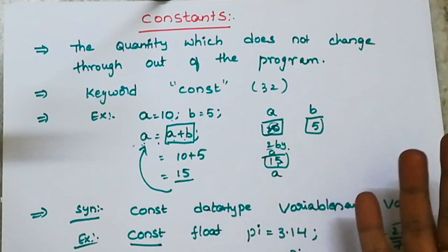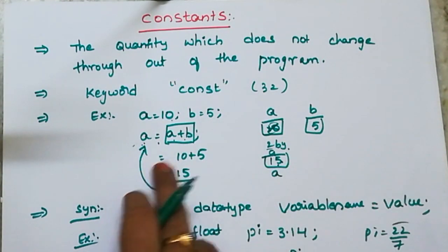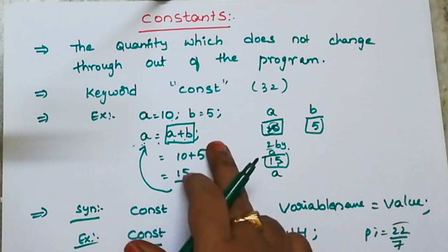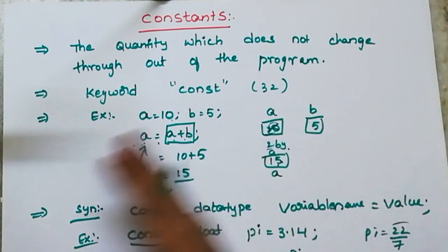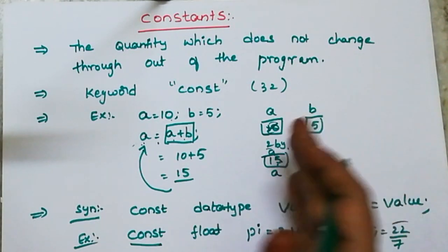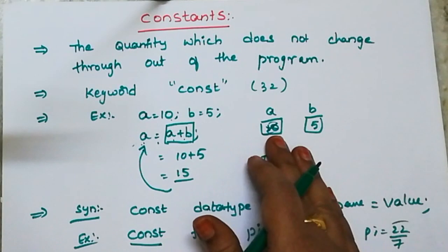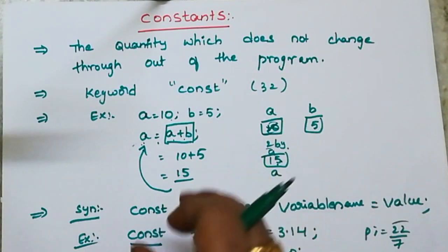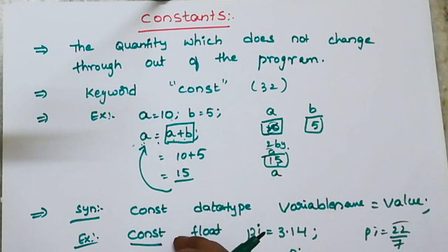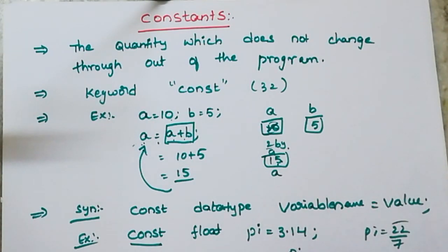So the difference between a constant and a variable is: with a variable, the values stored in it can be changed at the middle or end of the program — anywhere in the program we can change it. But with a constant, we declare it and assign a value once, and that same value runs throughout the entire program. We cannot change the value of a constant.